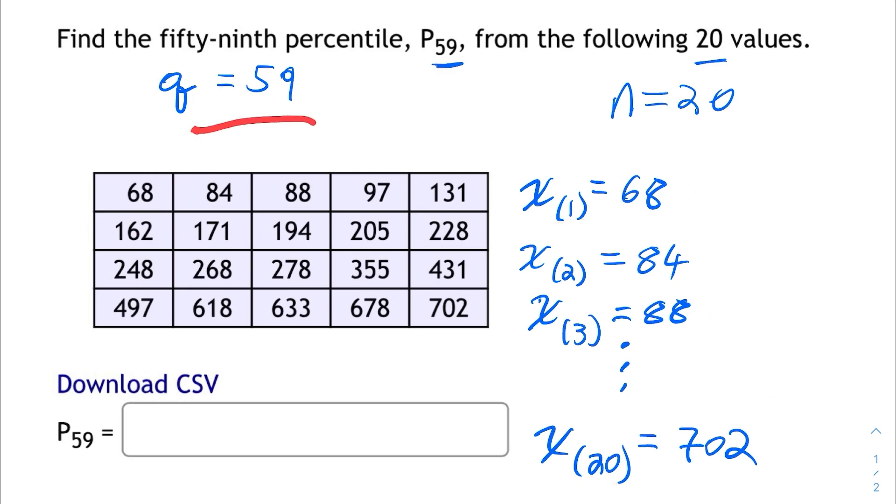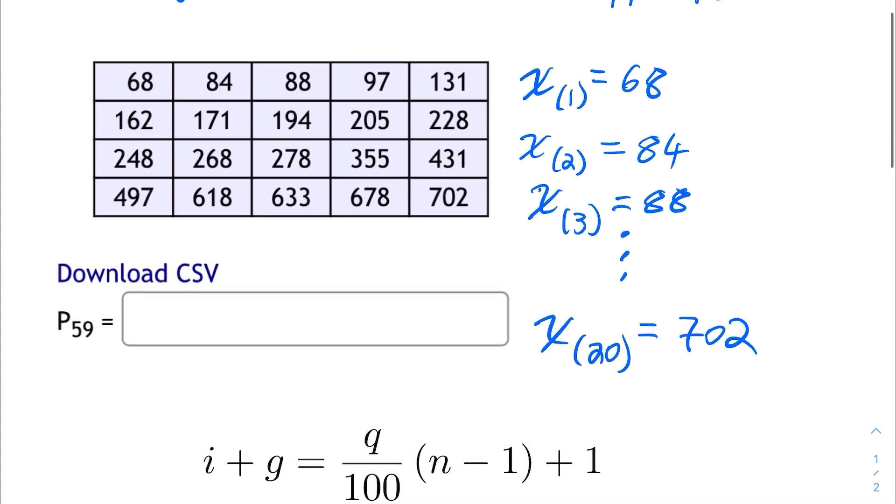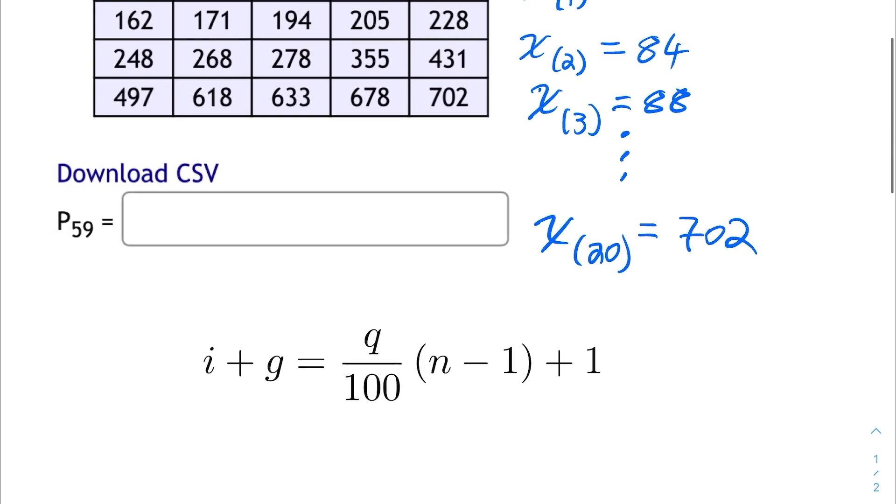Now, in order to find the 59th percentile, what we want to do is we want to find a value that separates the smallest 59% of this data from the rest of the data. So I want a value, one of these order statistics, or not one of the order statistics, it might even be between two order statistics, but I want a number where 59% of all the order statistics are less than that number. That's what I'm looking for. So, in order to do that, I'm going to use this linear interpolation method.